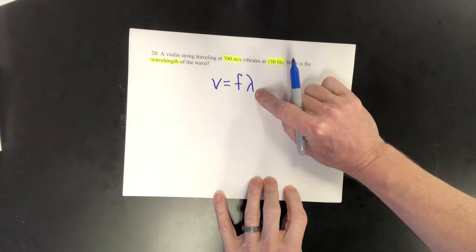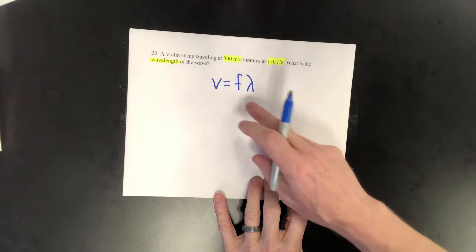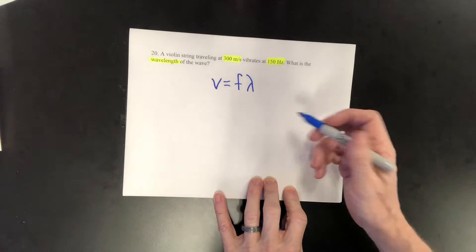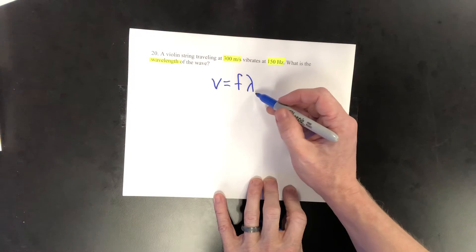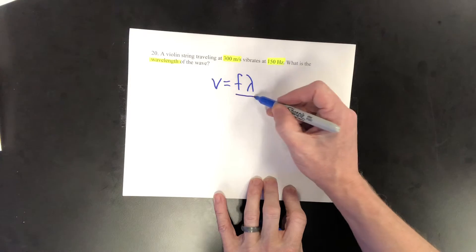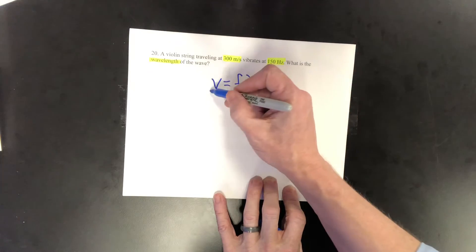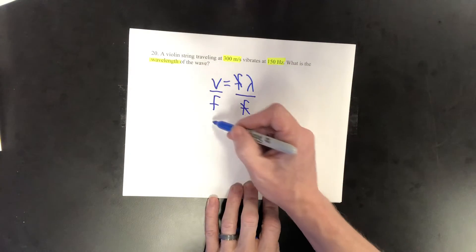But this formula solves for speed and we're solving for wavelength, so I'm going to rearrange and get wavelength by itself. Since we're taking frequency times wavelength, I'm going to divide by frequency on both sides. Frequency cancels out, and so speed divided by frequency equals the wavelength.